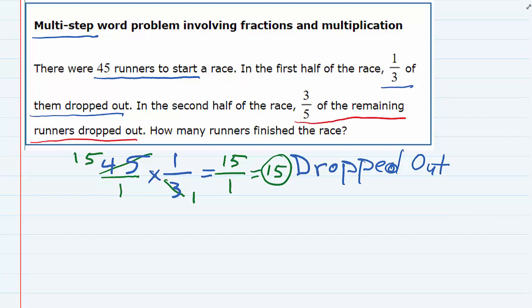But then we're told that three-fifths of the remaining runners dropped out. So if we started off with 45 and we've already had 15 drop out, we must now have 30 runners remaining.